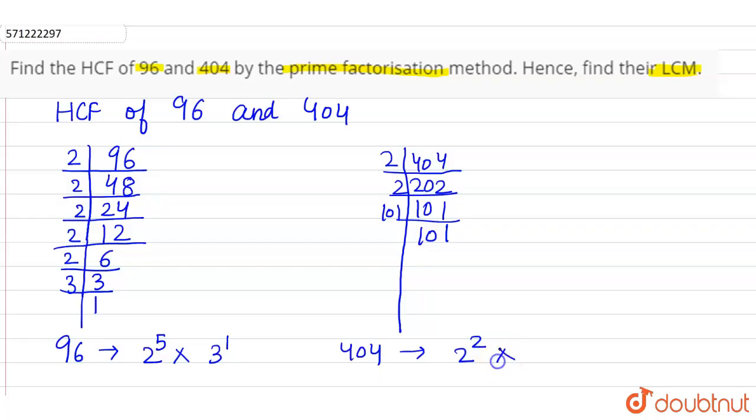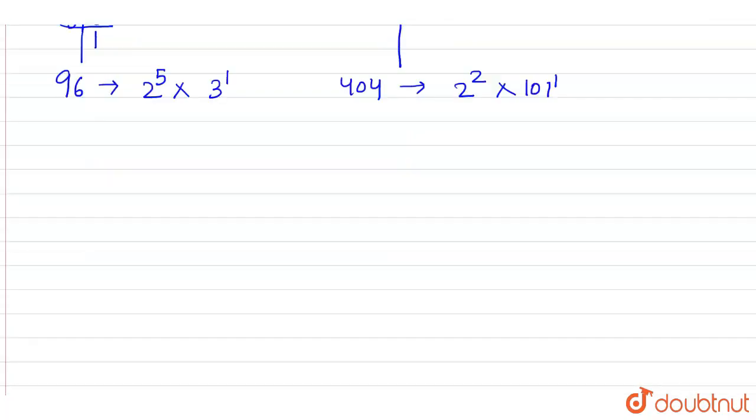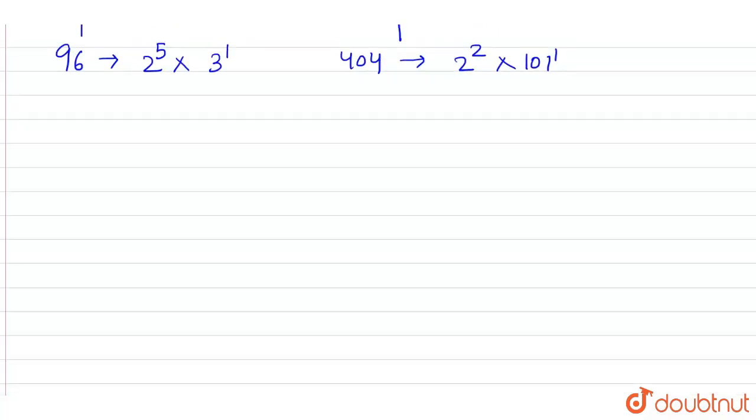Now we know that to find the HCF of these two numbers, HCF of 96 and 404, we have to find the highest common factor in these two. The highest common factor is 2 raised to the power 2, so it is 4. The HCF of these two numbers is 4.